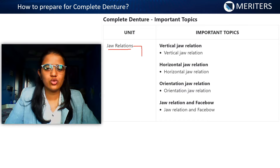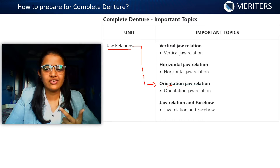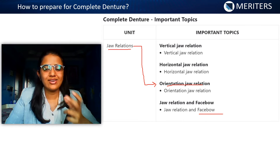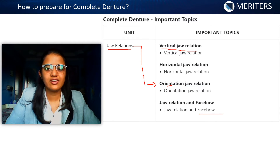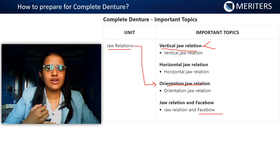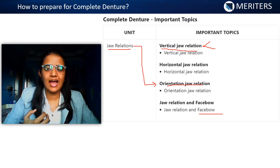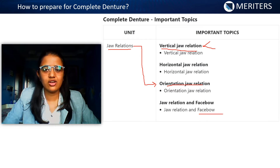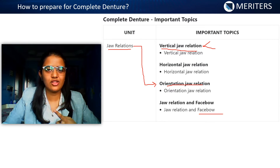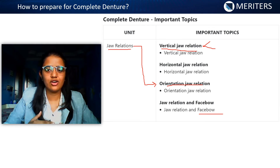When it comes to jaw relation, the first thing to know is orientation jaw relation — its definition, the face bow, types of face bow, and the exact difference between an arbitrary and kinematic face bow. For vertical jaw relation, it is recorded at rest and at occlusion. A very important NEET and AIIMS question involves knowing the changes when vertical dimension is increased versus decreased. You should also know all methods — mechanical and physiological — the difference between those methods, and what materials are used for recording jaw relation.